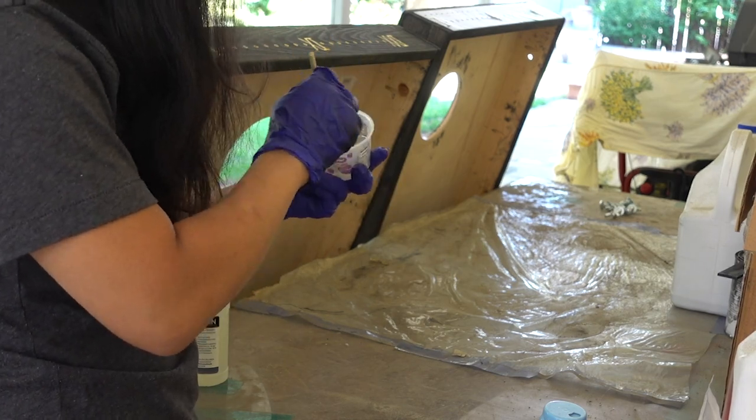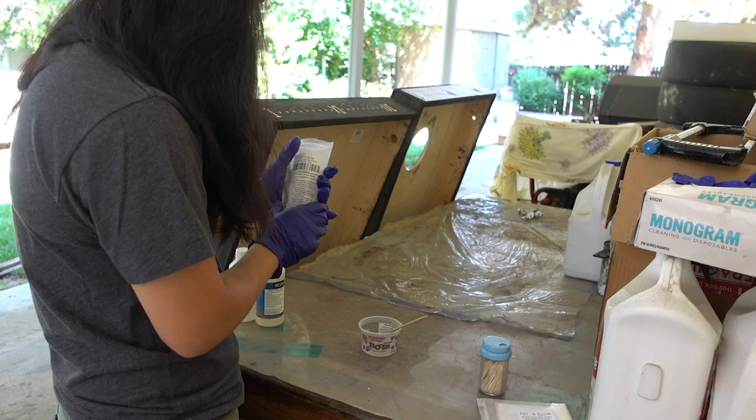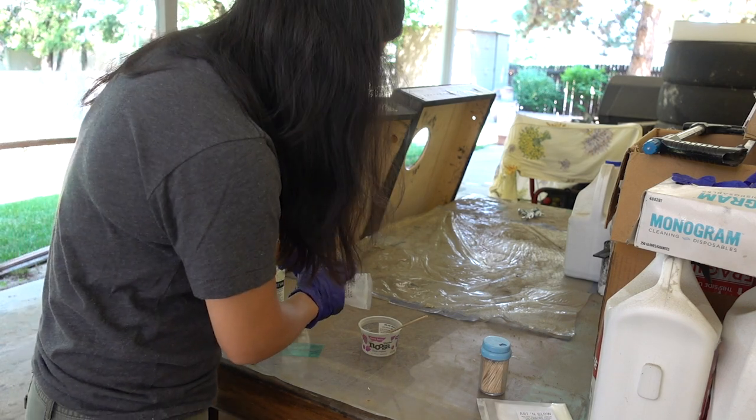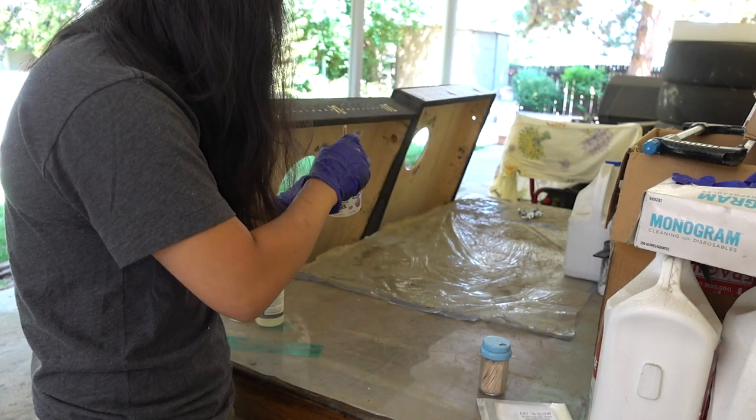When you've stirred the solution for 3-5 minutes, add the glow-in-the-dark powder. According to my directions, I only add 1 part powder to 4 parts resin mixture, so I guesstimated about 1 fourth of the powder, then continue to stir it thoroughly into the solution.